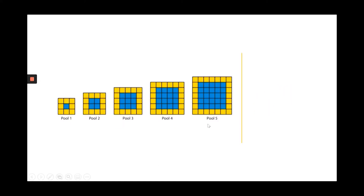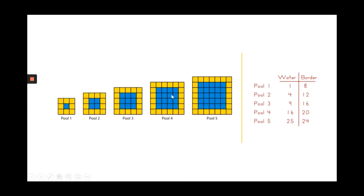Here are pool four and pool five. For pool four, there are 16 water tiles and 20 border tiles. For pool five, there are 25 water tiles and 24 border tiles. Do you notice any patterns in our t-chart? Can you see patterns with the water tiles, with the border tiles, or in between them?